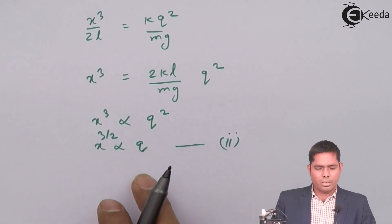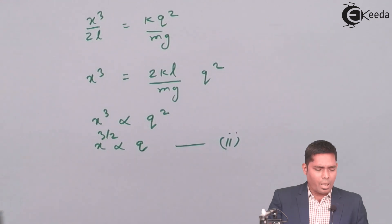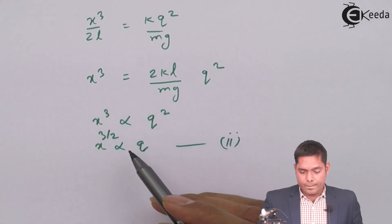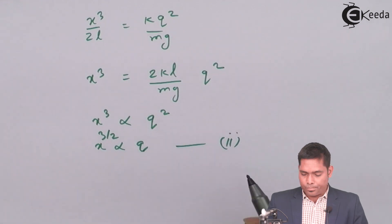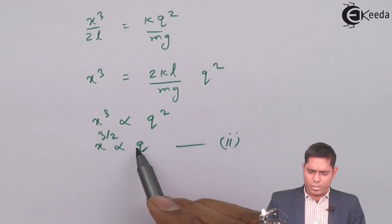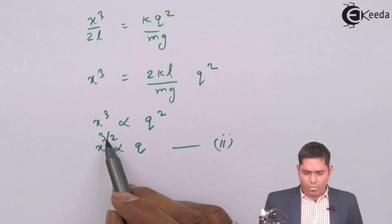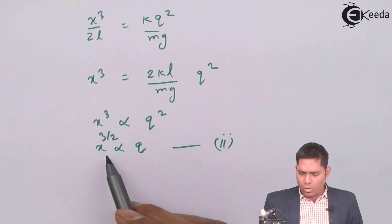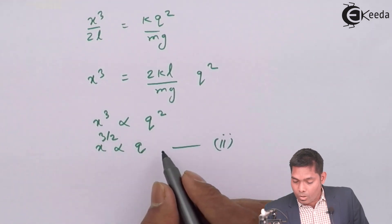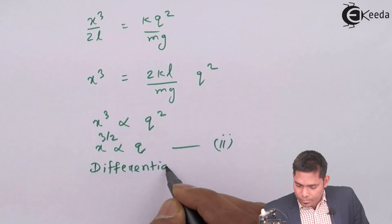Now, the question is to establish the relations among the value of V as a function of X. Now, I am getting X as a function of Q. They vary like that. So next, I have to find or differentiate this equation, this proportionality with respect to T, because I want dQ over dt. X to the power 3 by 2 proportional to Q, if I differentiate this equation with respect to T.